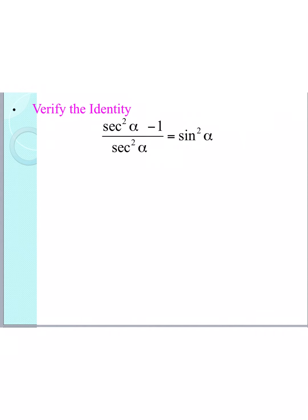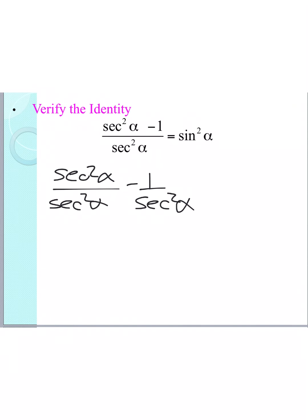Starting with the left side, I'm going to split this into two separate terms: secant squared over secant squared as one term, and negative 1 over secant squared as the second term. I can do this because there is a single denominator. Secant squared over secant squared equals 1, and 1 over secant squared equals cosine squared. Using my Pythagorean identity — cosine squared plus sine squared equals 1 — I subtract cosine squared from both sides to get sine squared, and I replace it with sine squared. The left side now matches the right side.